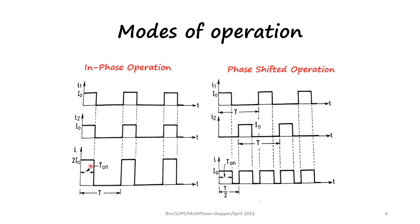The resulting output current in the in-phase case is twice the current of each chopper. In the phase-shifted operation, the choppers are on and off at different times. When I1 is conducting, the current in the load is I0. When both I1 and I2 are off, there is no current in the load. When the second chopper is on again, the current is I0. So the total current in the load is I0, but the frequency is different from in-phase operation.